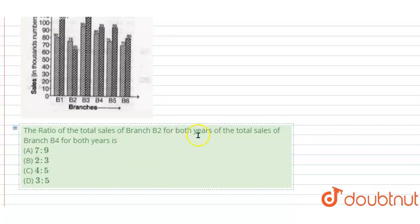The ratio of the total sales of branch B2 for both years to total sales of branch B4 for both years is: 7 to 9, 2 to 3, 4 to 5, or 3 to 5.